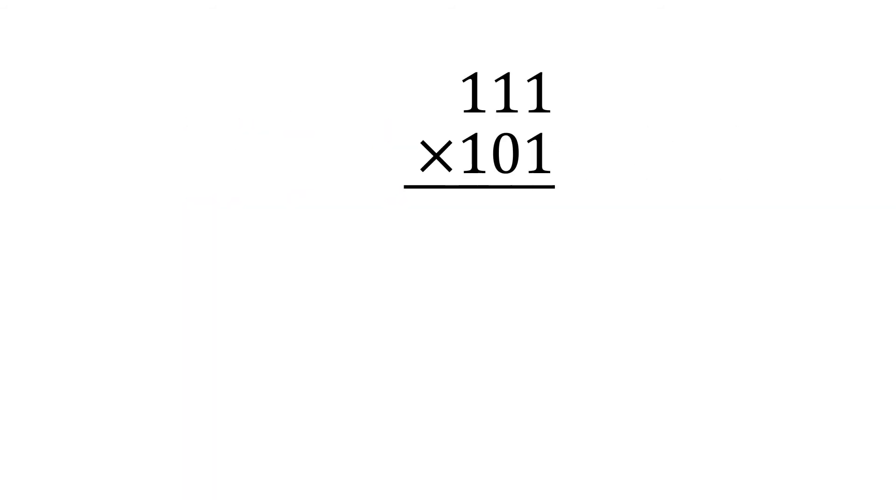Multiplying binary numbers is done exactly the same as decimal multiplication. So let's multiply 111 times 101. Starting in the ones place with the bottom number, we have 1 times 1 is 1, 1 times 1 is 1, and 1 times 1 is 1. Now we slide over to the tens, and don't forget to add the 0 to the partial product. 0 times 1 is 0, 0 times 1 is 0, and 0 times 1 is 0. Now add two 0's in the partial product and multiply the hundreds place. 1 times 1 is 1, 1 times 1 is 1, and 1 times 1 is 1.